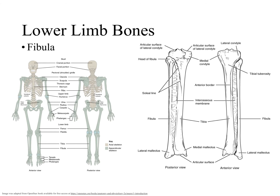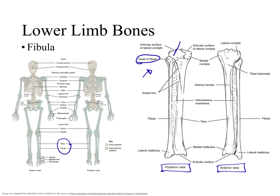If we zoom in and take a look at this arrangement between the tibia and the fibula, we have here a posterior view and an anterior view. We can see in the posterior view very well that the head of the fibula touches the tibia bone right there.